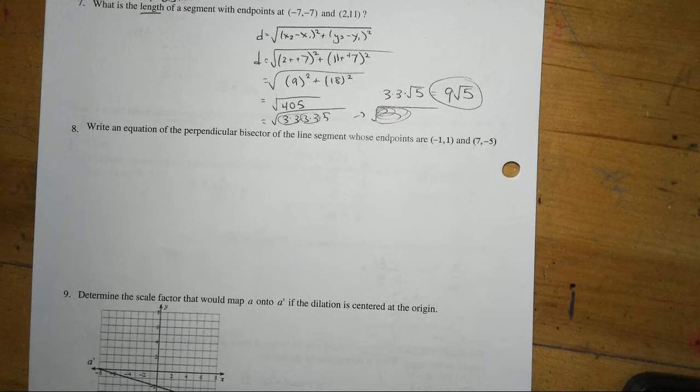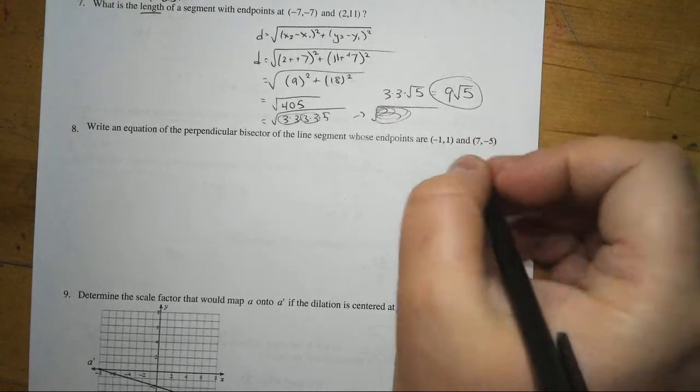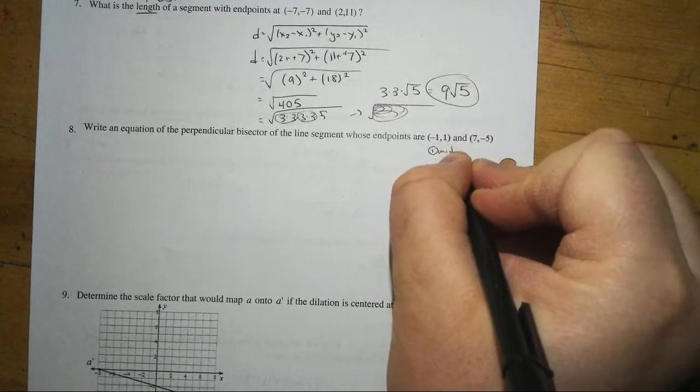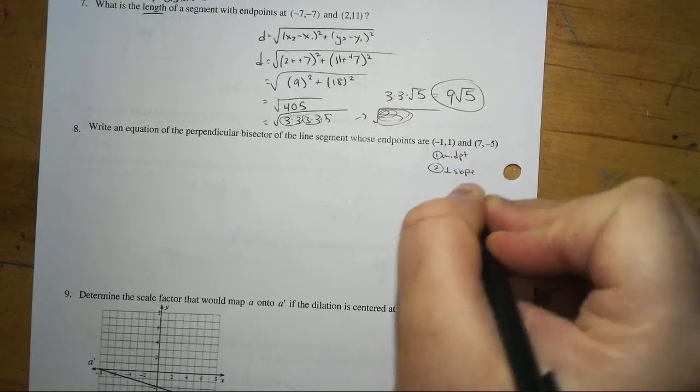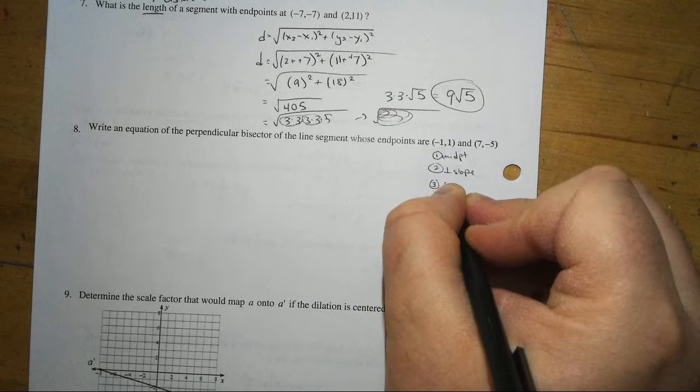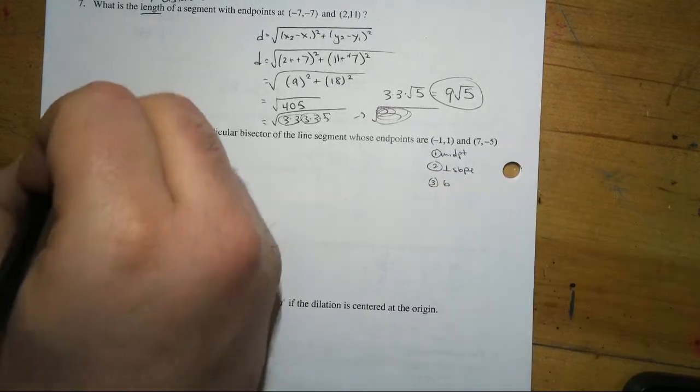Perpendicular bisector here for the next one. We want to find, remember, a couple things. The midpoint. We want the perpendicular slope. And then we want to find what the y-intercept is. So, we'll do the midpoint first.